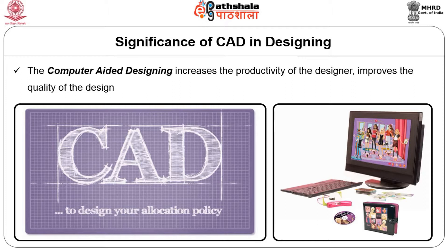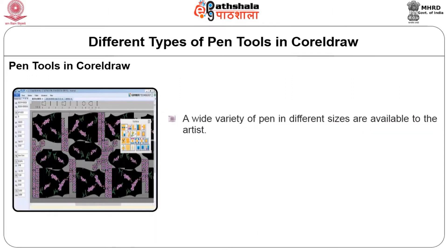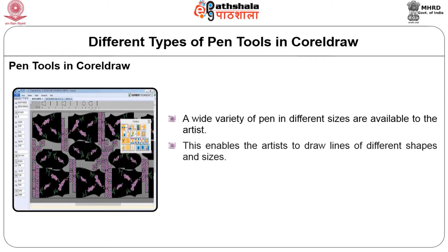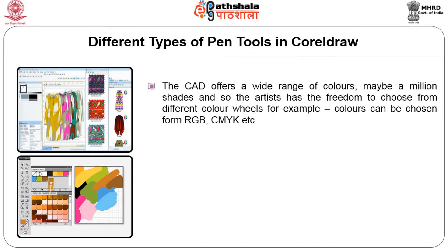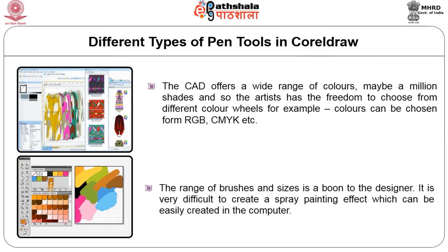Designing of garments using CAD also has a lot of advantages. In CAD, we have a wide variety of pens available to the artist in different sizes and shapes. This enables the artist to draw lines in different shapes and sizes, and the shapes of the lines can be easily modified without erasing them. The CAD also offers a wide range of colors — maybe a million shades. The artist also has the freedom to choose from color wheels like RGB and CMYK. The range of brushes and sizes is also a boon to the designer. If drawn by hand, it is very difficult to create a spray painting effect, which can be easily created in the computer with a spray painting brush.